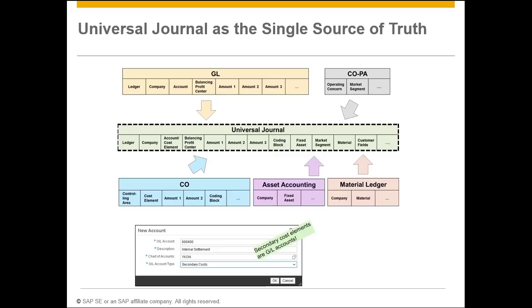What we typically find now is everybody does pretty much all the components — it's rare to encounter a customer not doing asset accounting if they've got assets. To reflect this, we've tried to simplify our architecture and bring all the transactional data from these separate components into one table: the Universal Journal. From a reporting point of view, you're really getting what an accountant friend of mine described as the ultimate pivot table — it has all the general ledger dimensions, ledger, company code, account, profit center, cost center, order, project, business process, and all the COPA characteristics like product, customer, customer group, product hierarchy, region, and brand.